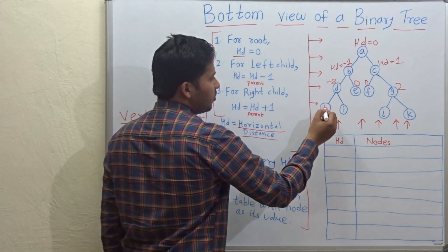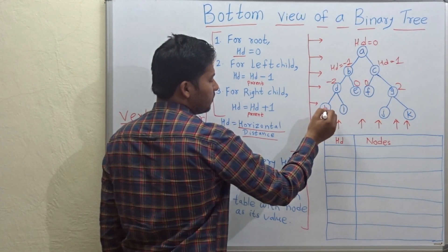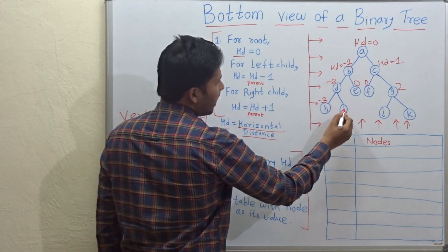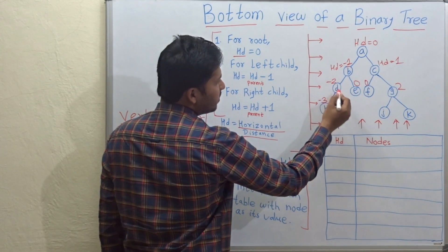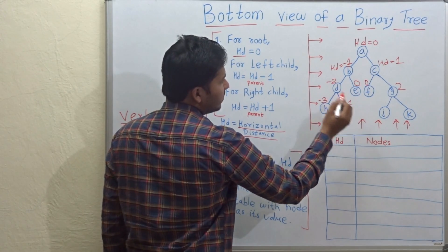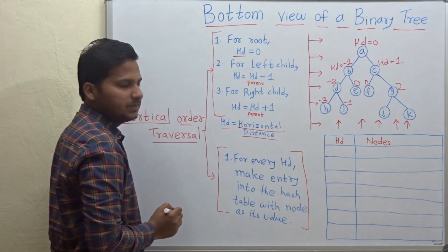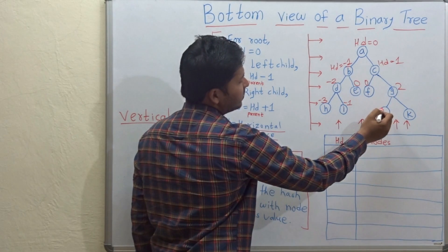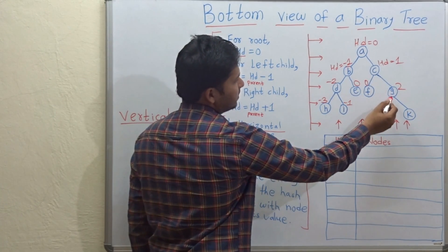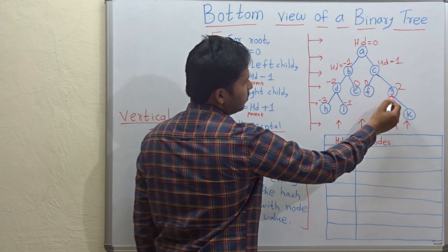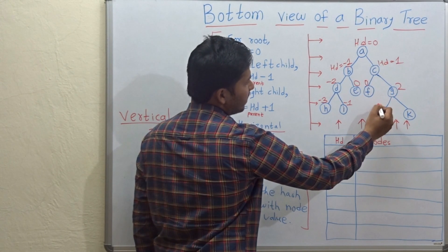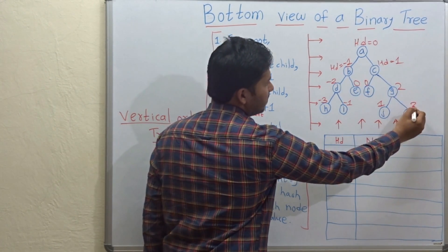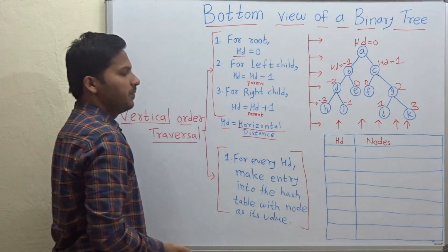For left child of d, that is h, hd will be minus 3. For i, hd will be minus 2 plus 1 which is equal to minus 1. For g's left child j, hd will be 2 minus 1 which is equal to 1. And for the right child, 2 plus 1 which is equal to 3.